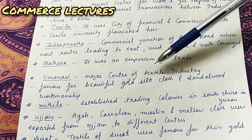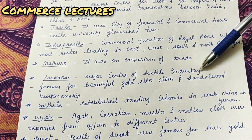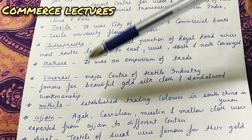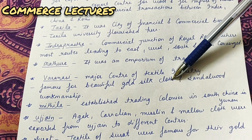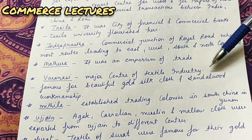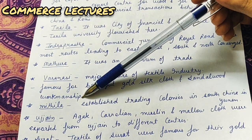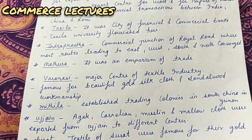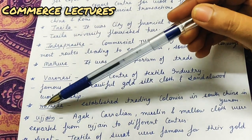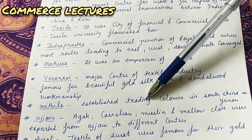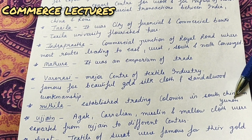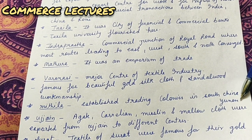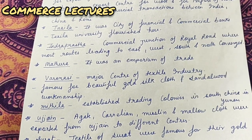Next is Mathura - everyone has heard the name. It was an emporium of trade; a lot of trade was carried out here. Next is Varanasi - a major center of the textile industry. Varanasi was famous for beautiful gold silk cloth and also for sandalwood workmanship. Next is Mithila, which established trading colonies in south China - many trading colonies were established in Yunnan of south China.